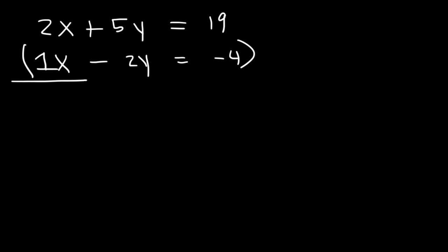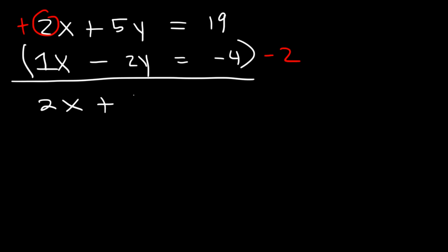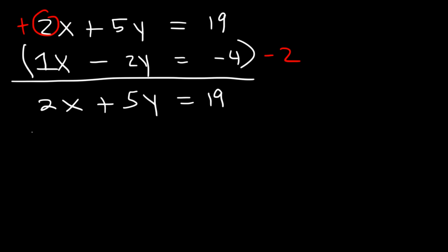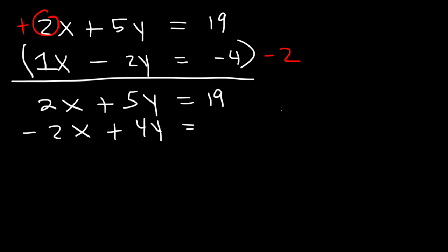We need to multiply the second equation by negative 2, since we have a positive 2x in the first equation and we want a negative 2x to cancel it. Rewriting: the first equation stays the same. For the second equation multiplied by negative 2: 1x times negative 2 is negative 2x, negative 2y times negative 2 is positive 4y, and negative 4 times negative 2 is positive 8.